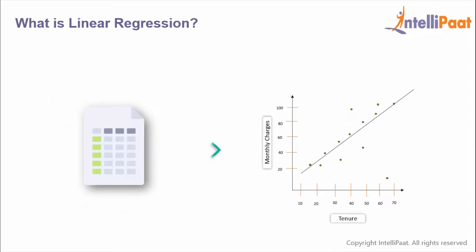So he collects all of the customer data and implements the linear regression algorithm by taking monthly charges as the dependent variable and tenure as the independent variable. After implementing the algorithm, what we understand is there's a linear relationship between the monthly charges and the tenure of the customer.